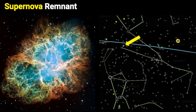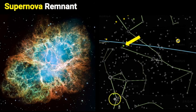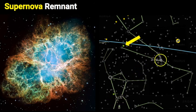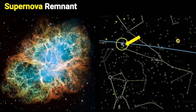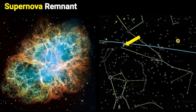If you locate Orion and use the belt stars to find the V-shaped face of Taurus, then come down to the lower horn, the Crab Nebula is located right near the tip of the horn in Taurus the Bull.